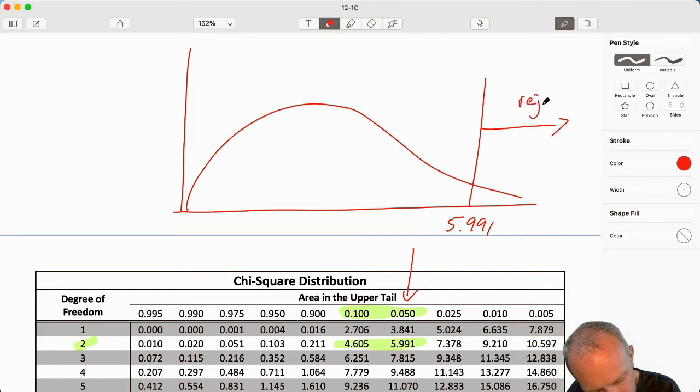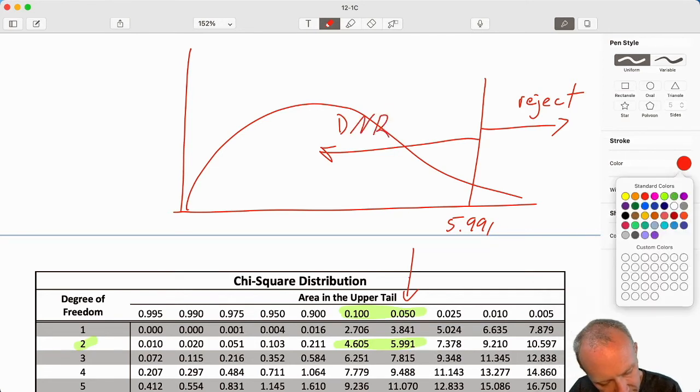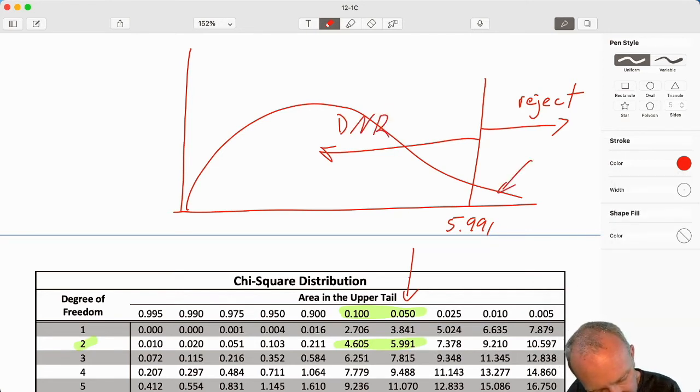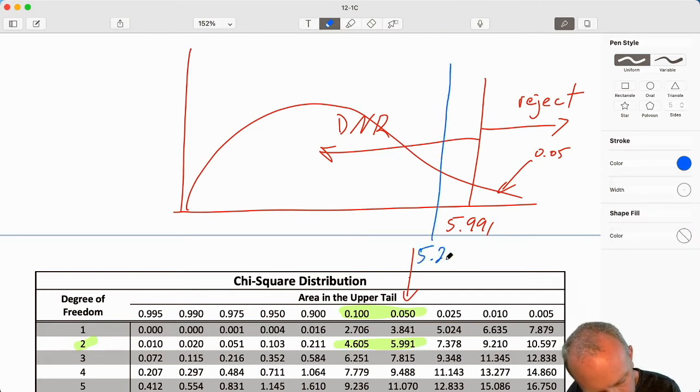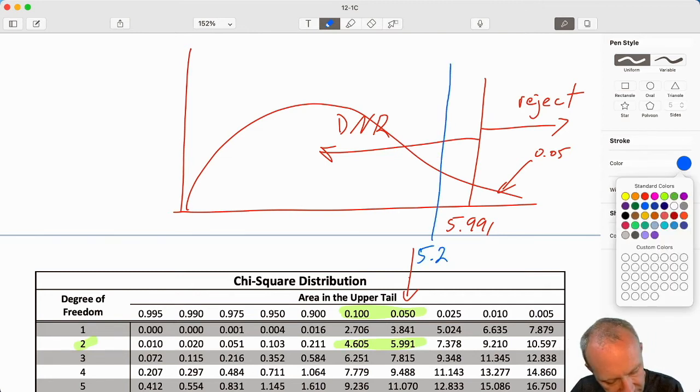Recall, this is an upper-tail chi-squared test. And so here I have that critical value, 0.05. That critical value is 5.991. That defines where I'm going to reject and where I will not be rejecting. That gave me an area here of alpha.